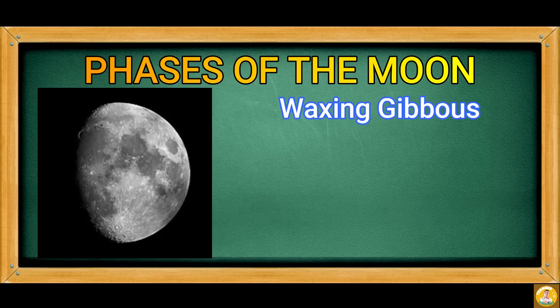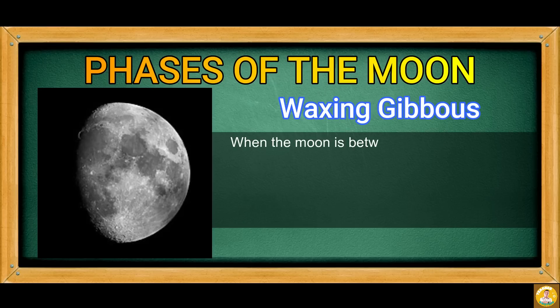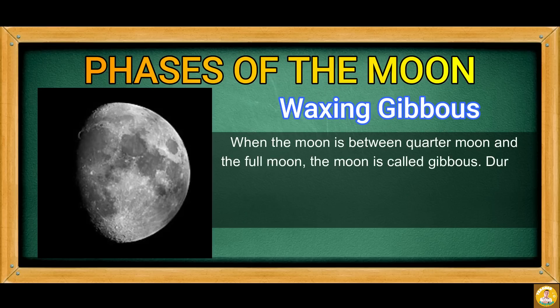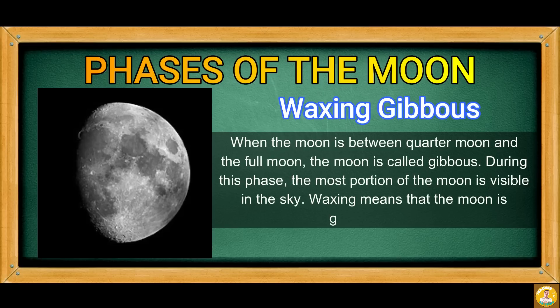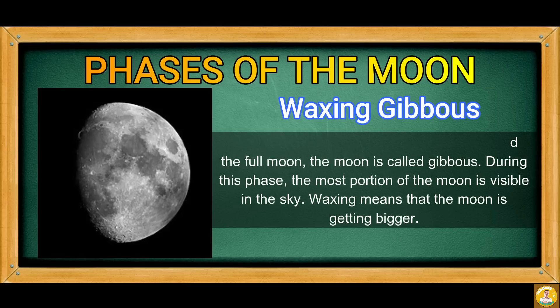Waxing Gibbous. When the moon is between the quarter moon and the full moon, it is called Gibbous. During this phase, most of the moon is visible in the sky. Waxing means that the moon is getting bigger.